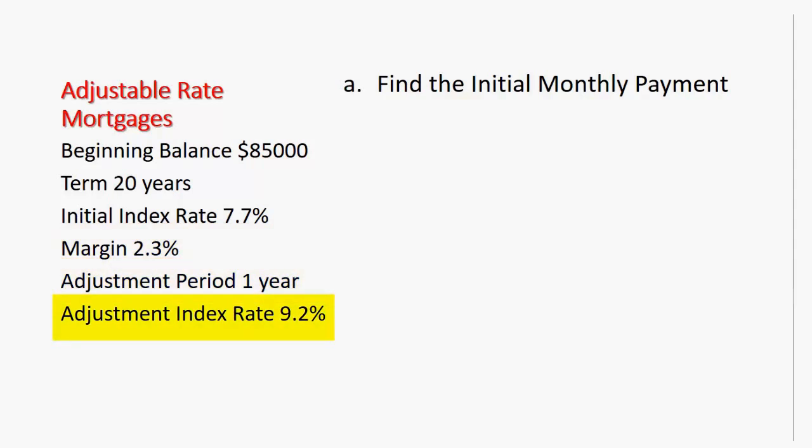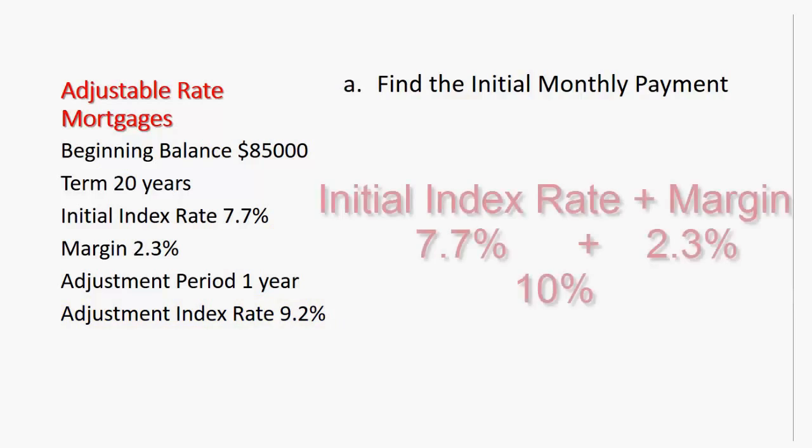The adjustment index rate is 9.2%. The bank is going to base the interest rate on a certain published index percentage, and they're going to add to that a margin of 2.3%. So at the start of the loan, the index rate is 7.7%, the margin is 2.3%, so at the start of the loan, we're going to have a 10% interest rate.